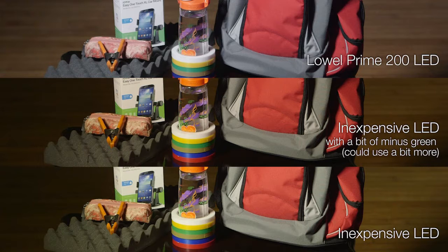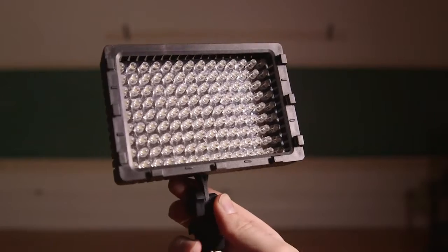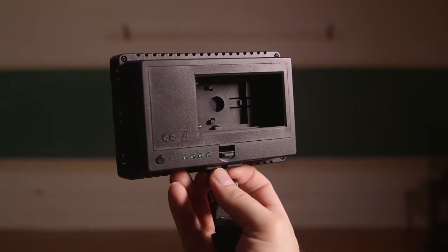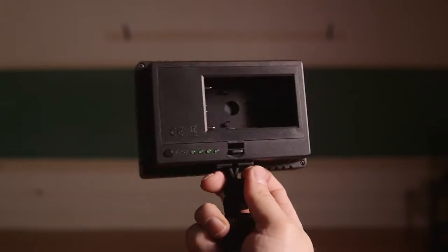Right now, most of the lower cost LED units will need some minus green filtration just to get them in the neighborhood of looking reasonable. Because of this, they are not my go-to light of choice for lighting up people, but I do use them for a lot of other things. This is a very cheap battery-operated, on-camera style LED light. This particular light has 160 LEDs and has a reasonable output that is variable with a dimmer.